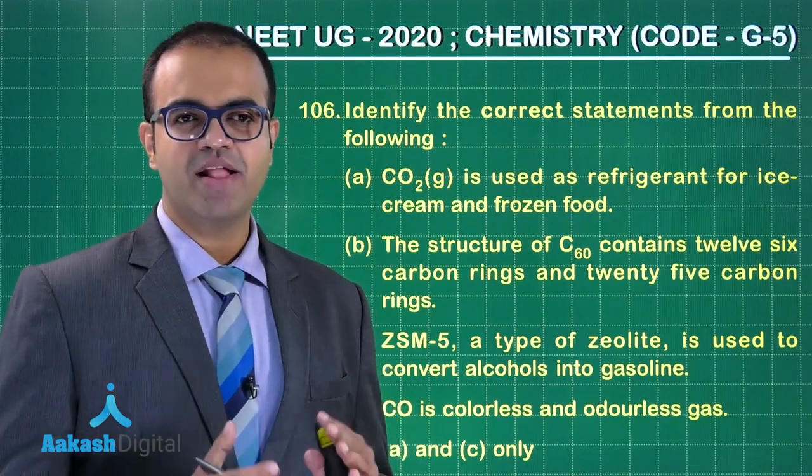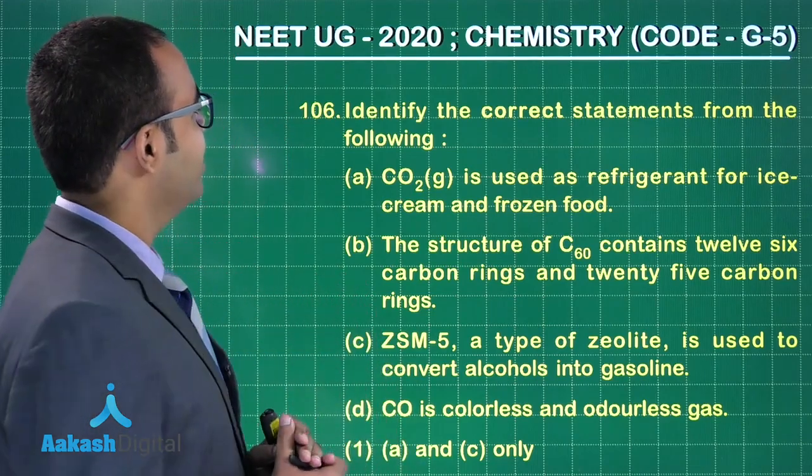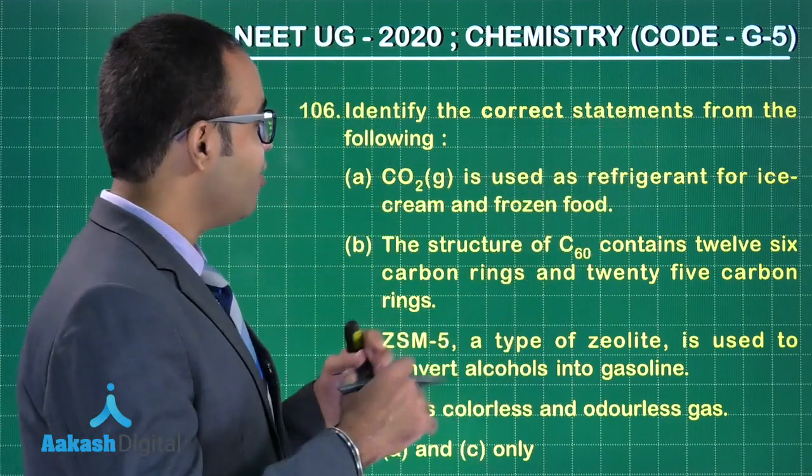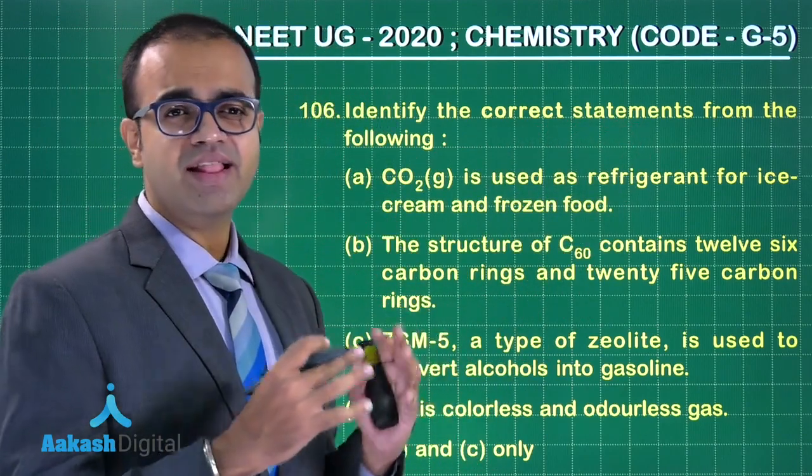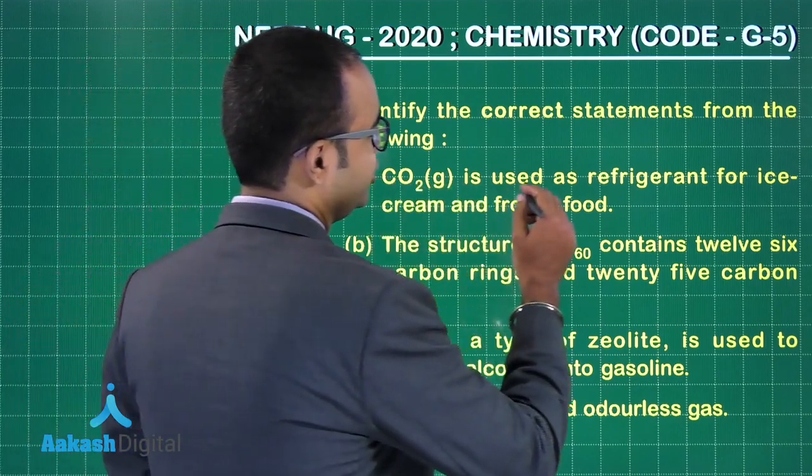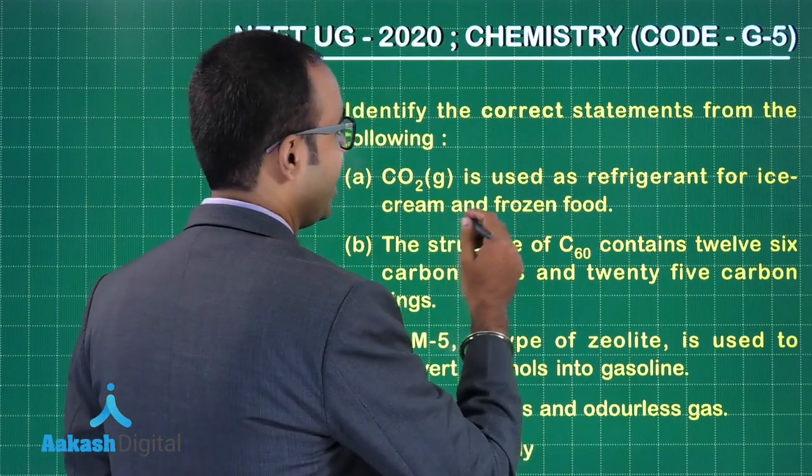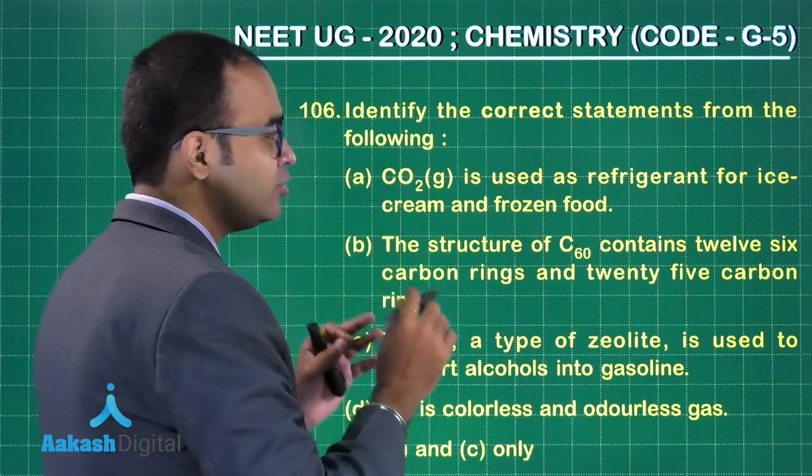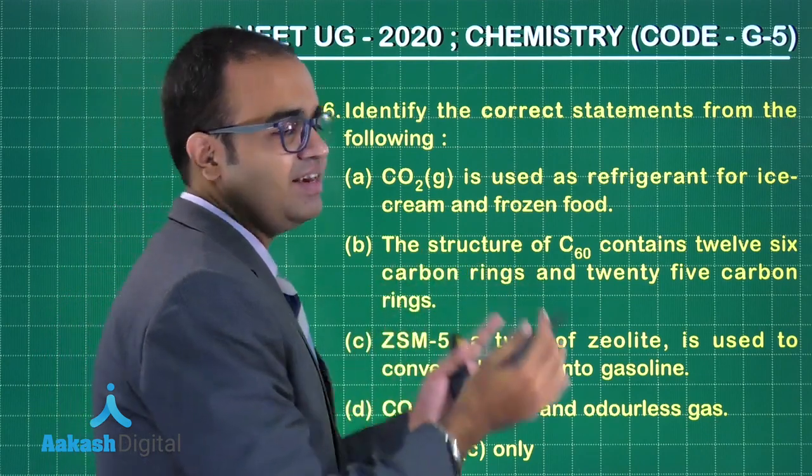Let us solve question number 106. Identify the correct statements from the following. Before going through the options, just look at the statements. CO2 is used as a refrigerant for ice cream and frozen food. Is this statement correct? Most of you will say that the statement is correct, but the twist in the tail is what?